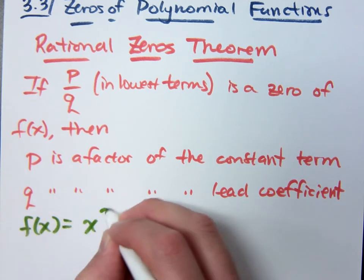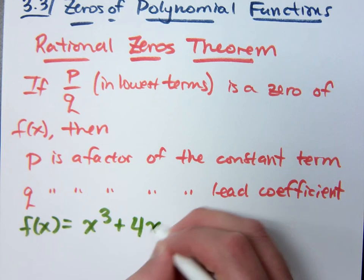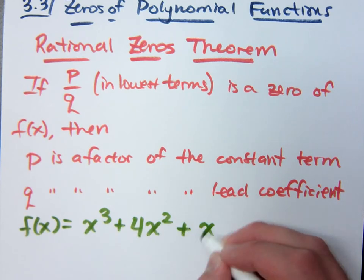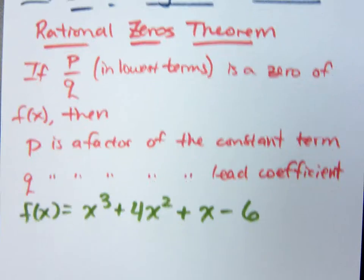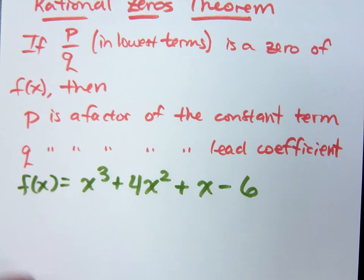So if I were to say this: f of x equals x to the third plus 4x squared plus x minus 6. How many zeros will I have here? Three.